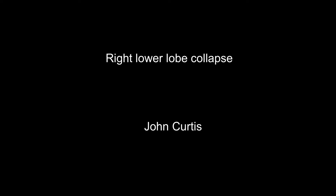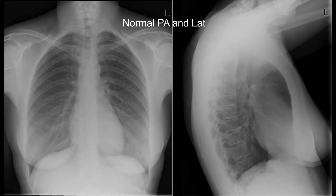The imaging findings of right lower lobe collapse. Here is a normal PA and lateral chest radiograph.